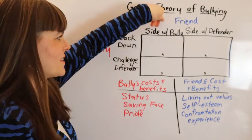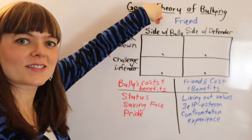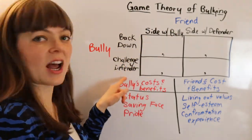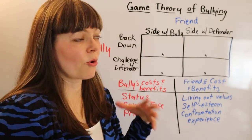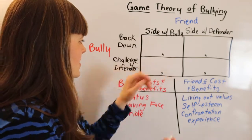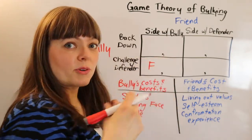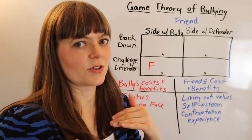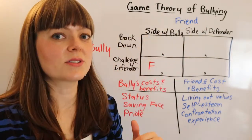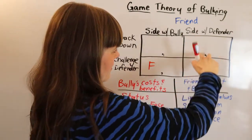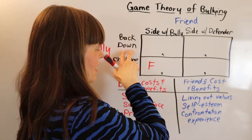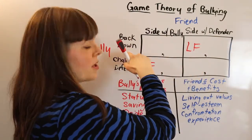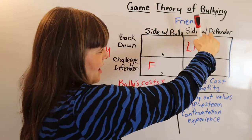The bully would much prefer that friends side with the bully rather than the defender, so the bully's favorite is definitely in that column. The bully probably most prefers the scenario where friends side with the bully and the bully challenges the defender — establishing their role at the top of the pecking order. The bully's least favorite is when friends side with the defender, causing shame and revealing low status. The worst scenario for the bully is backing down while everyone sides with the defender.